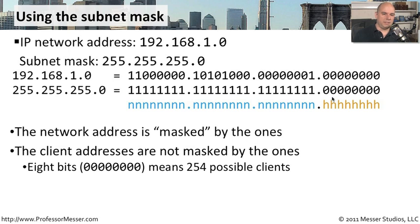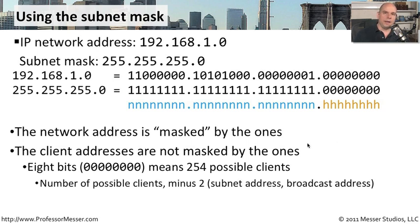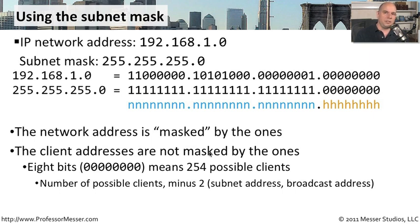If we look at those last eight bits, we can calculate out what that final value is. All eight of those bits together would be 255, so we know there are a total of 256 IP addresses between 0 and 255 in this range. But we take two away — one address is the subnet address, and another is the broadcast address. That means we have 254 possible clients on this network. We figure out the total, remove the subnet address and the broadcast address, and everything left is the usable host count.